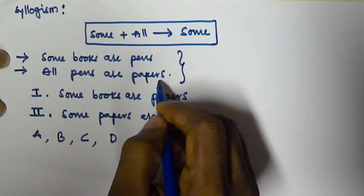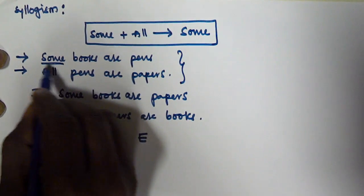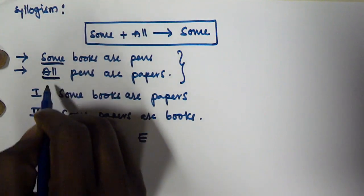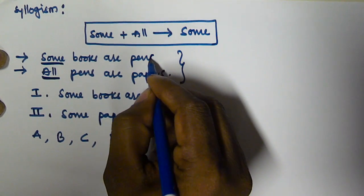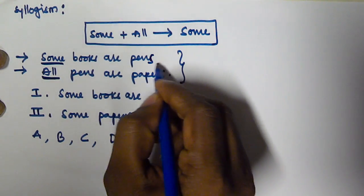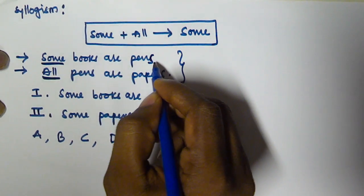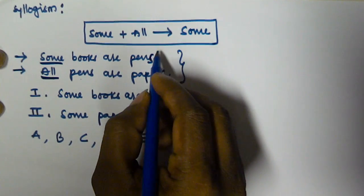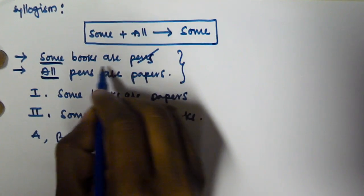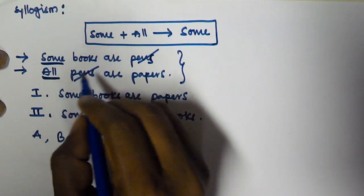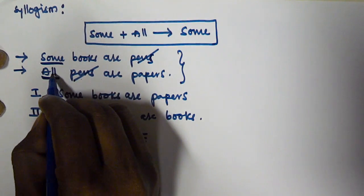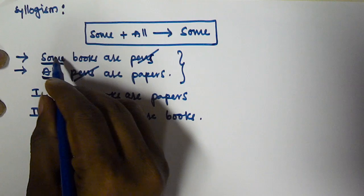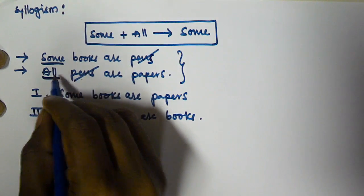Now let us see what the syllogisms are. If you observe these two syllogisms, the first one starts with 'some' and the second one starts with 'all.' The predicate of the first statement is equivalent to the subject of the second statement, so we cancel both of them. Some plus all gives sum, according to this rule.